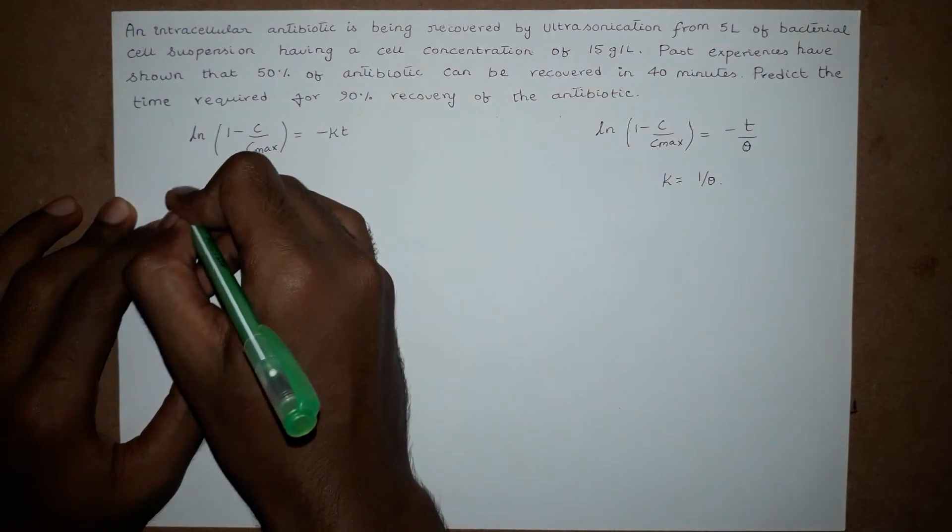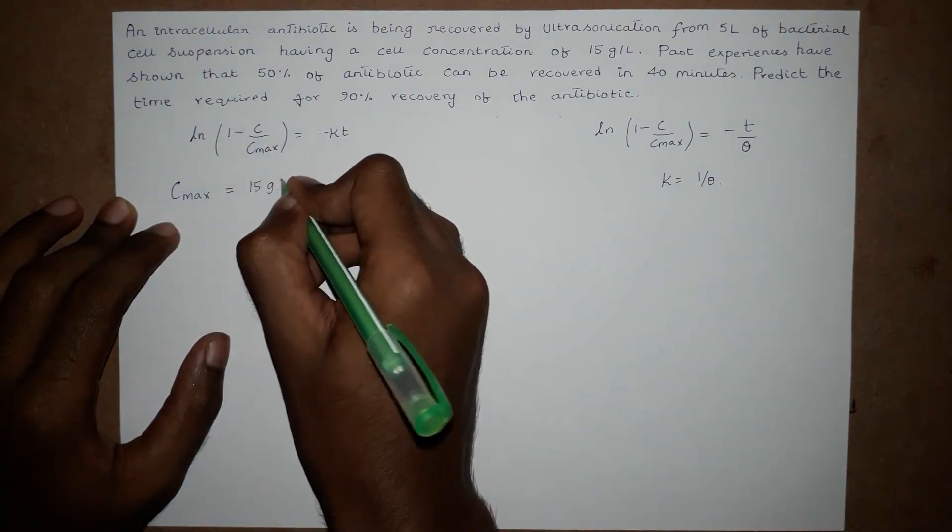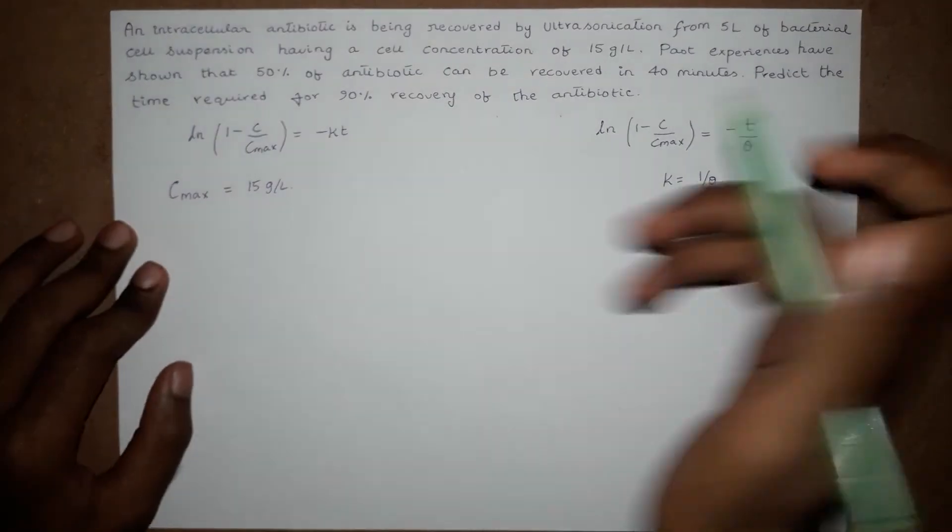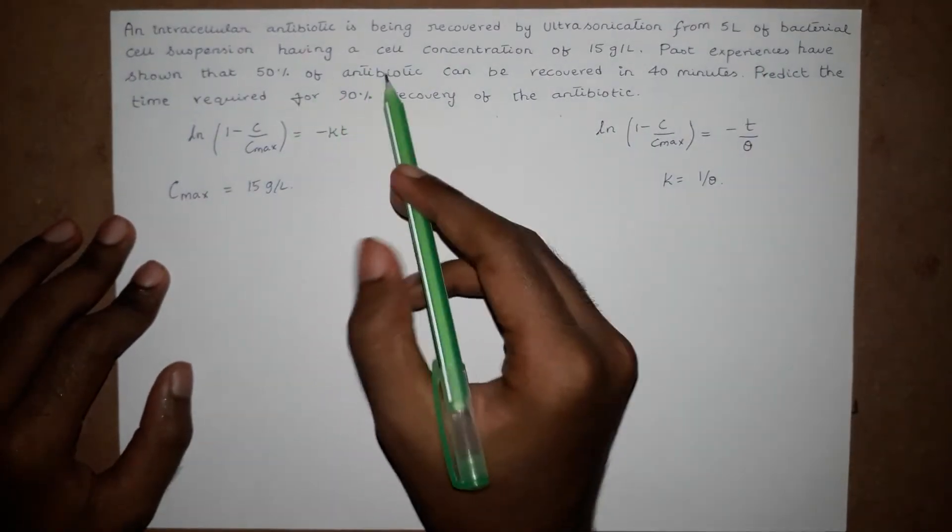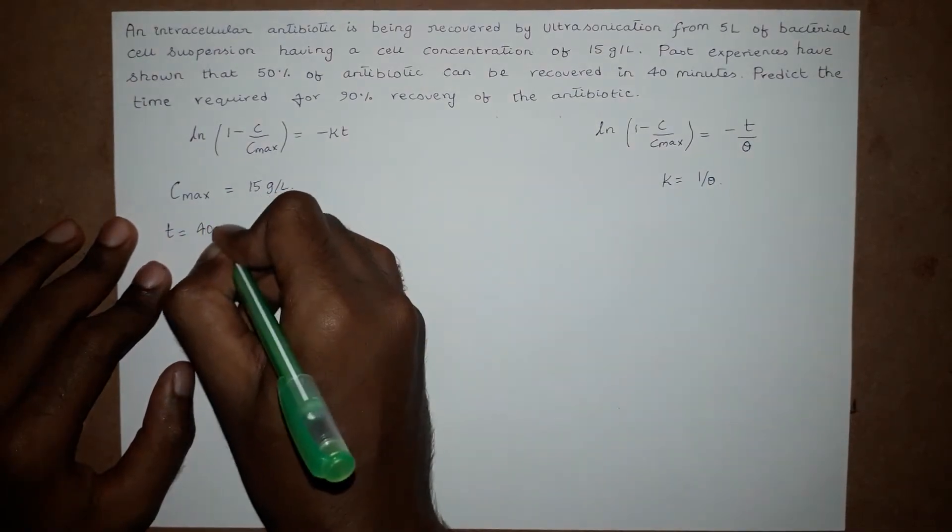Therefore, the maximum concentration Cmax equals 15 grams per liter. Past experience has shown that 50% of antibiotic can be recovered in 40 minutes, so when time equals 40 minutes, C by Cmax equals 50%, that is 0.5.